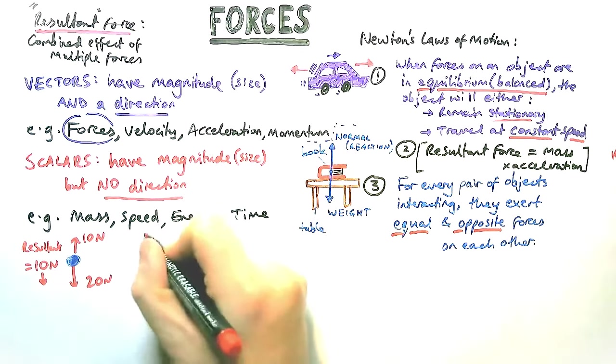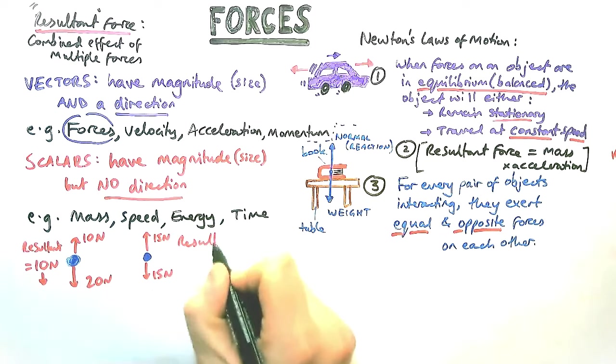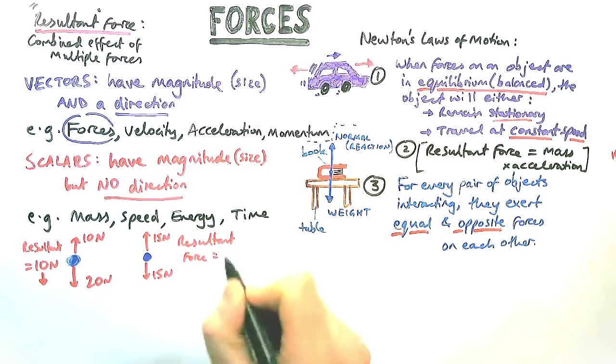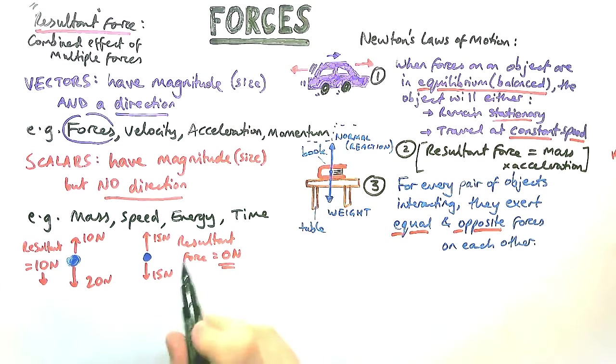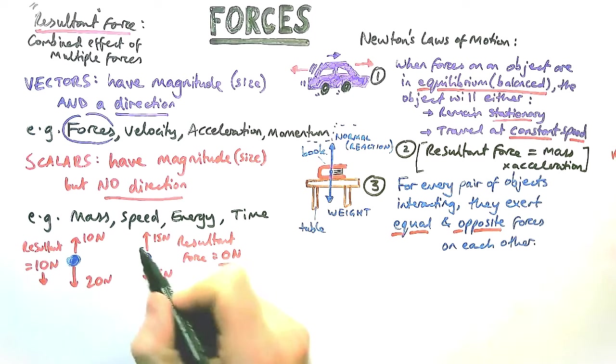Let's have a look at a second example. This time I've got a different number of forces. I've got 15 newtons up and 15 newtons down. Those arrows should be equal in size and the resultant force, if you subtract them, is 0 newtons, because 15 minus 15 is 0.